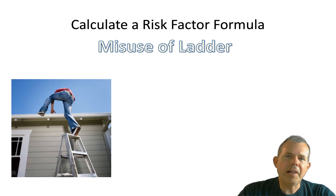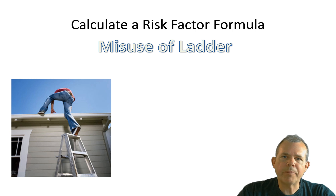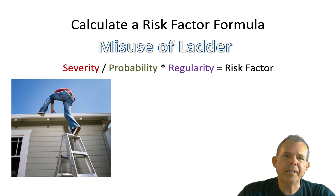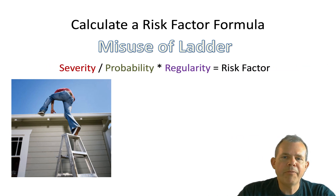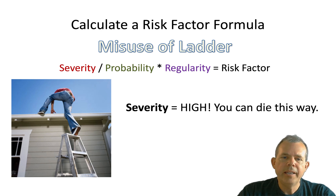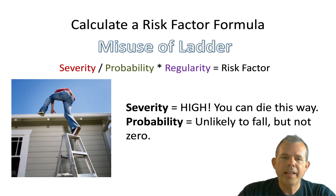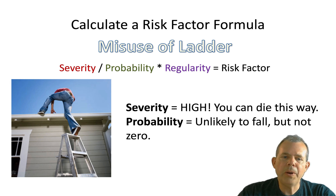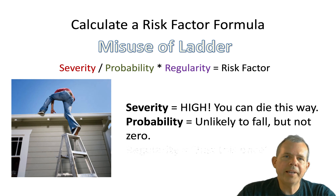You might not be climbing El Capitan, but here is an example of where you might be climbing. Let's talk about the misuse of a ladder and what the probability, consequences, and regularity are. The severity is pretty high — people fall off ladders, crack their head, and even die, so that's a pretty high level. The likelihood, or probability, is pretty low — you're not going to fall, and it's not quite zero, but most people climb a ladder without getting hurt.